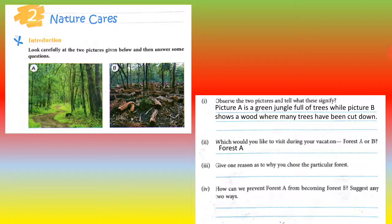Which would you like to visit during your vacation, picture A or B? During your vacation, your holidays, where do you like to go? Picture A or B? So, forest A or B? Forest A, obviously. Give one reason as to why you choose the particular forest. One reason you have to give. Why do you like this forest? So, picture A, we love picture A because there are many trees, green trees which look very attractive. They are green. That is why.